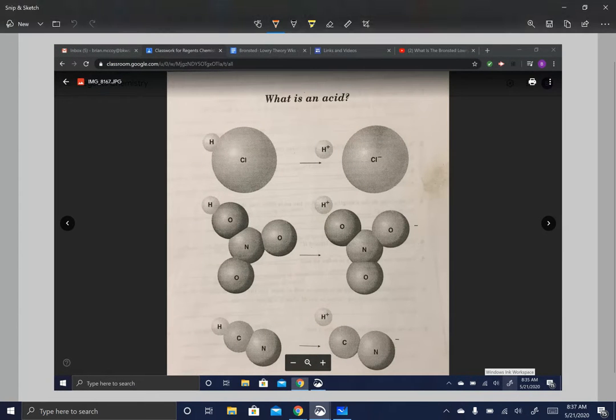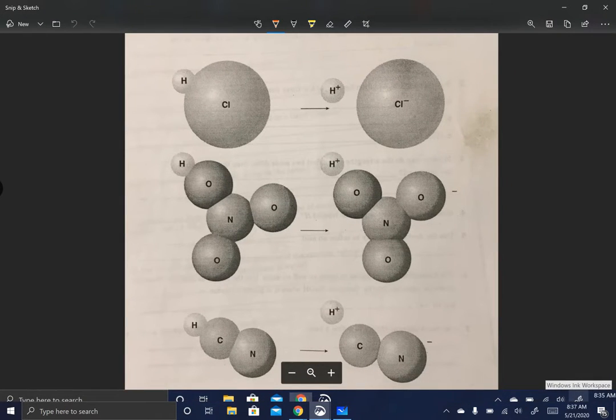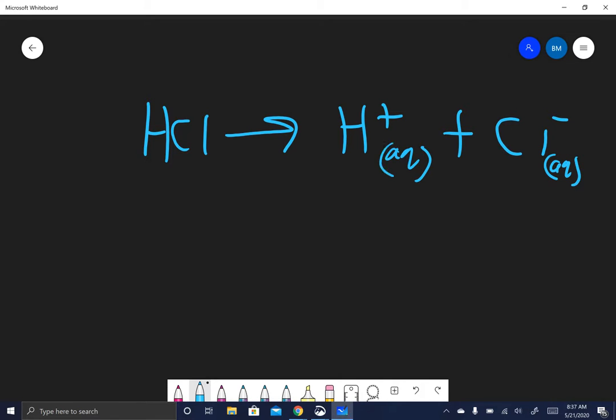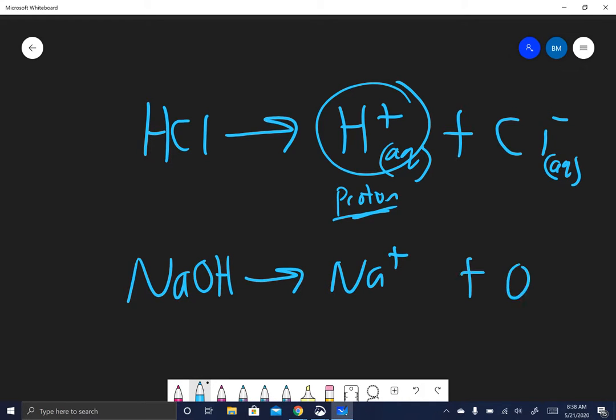First of all we have the acid base theory that Arrhenius said. Arrhenius said if you have an acid like HCl, when you put it in water, it will dissociate, break apart, into these two ions. Aqueous means it's in water. And Arrhenius said if an acid releases or produces H plus ions, that's what makes it an acid. So this is called a hydrogen ion, also called an H plus ion, also called a proton. If a substance releases OH minus, then it is a base.